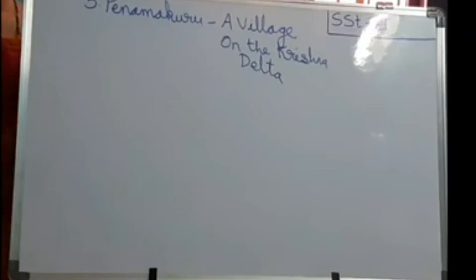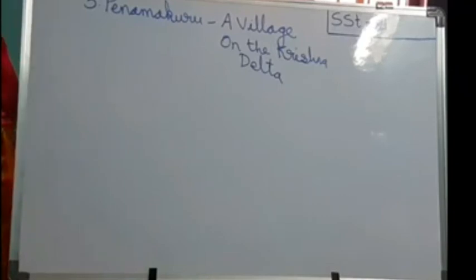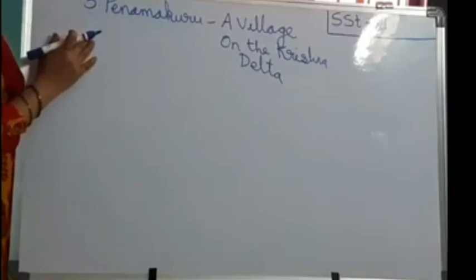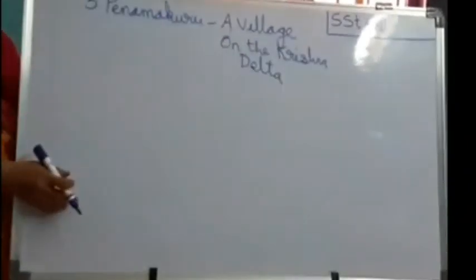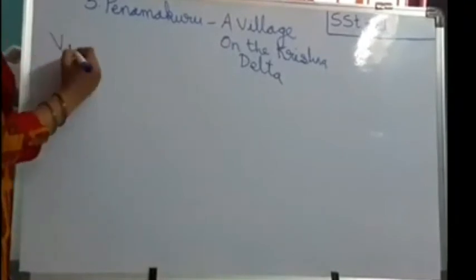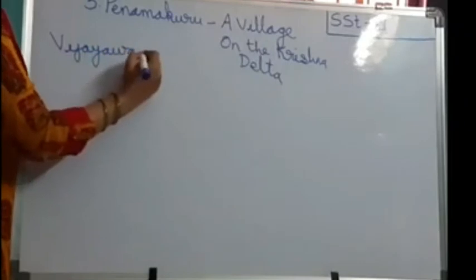Let us see where its location is and how they travelled. Here in the lesson, they used the word 'we.' 'We' means our professors. They wanted to see how people are living in a delta village, as given in the textbook. The professors started their journey from Vijayawada.